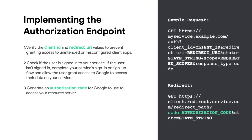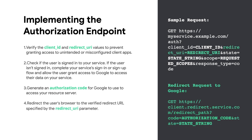The authorization code can be any string value, but it must uniquely represent the user, the client the token is for (Google in this case), and the code's expiration time. It must not be guessable and must be single use, meaning the specific code can only be used once. You typically issue authorization codes that expire after approximately 10 minutes. Redirect the user's browser to the URL specified by the redirect URI parameter, including the authorization code you just generated and the original unmodified state value, by appending the code and state parameters.